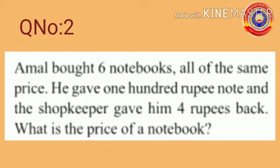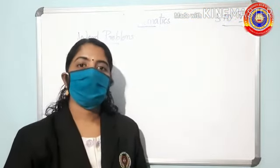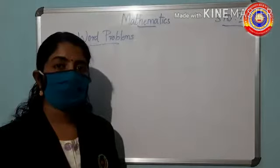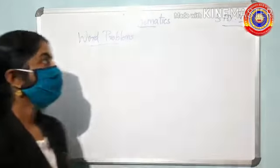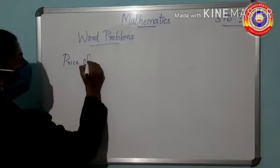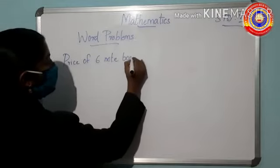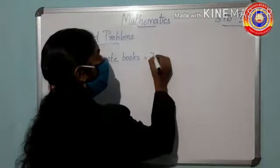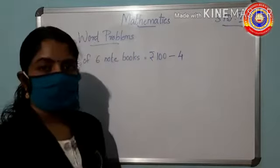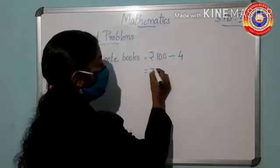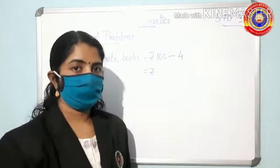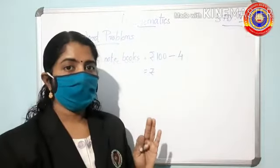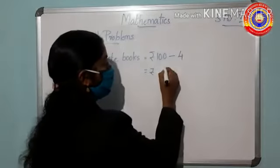Question number 2: Amal bought six notebooks, all of the same price. He gave a 100-rupee note and the shopkeeper gave him 4 rupees back. What is the price of one notebook? The total price of six notebooks is not directly given, but since Amal paid 100 rupees and got 4 rupees back, the price of six notebooks = 100 − 4 = 96 rupees.